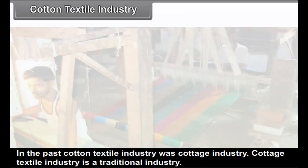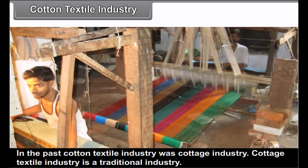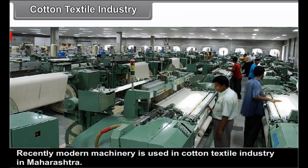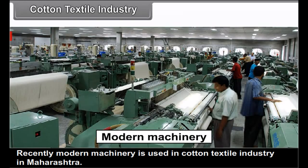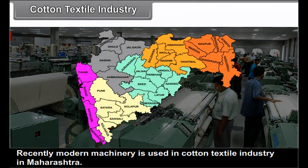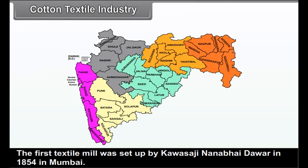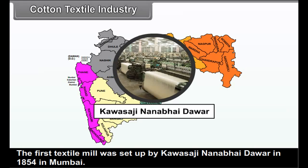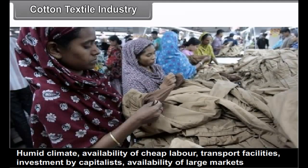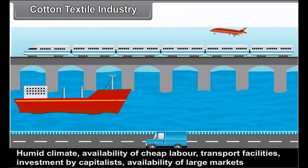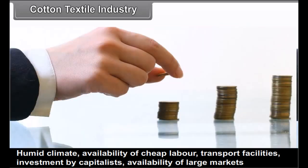In the past, cotton textile industry was a cottage industry. Cottage textile industry is a traditional industry. Recently, modern machinery is used in cotton textile industry in Maharashtra. The first textile mill was set up by Kavasji Nanabhai Davar in 1854 in Mumbai.